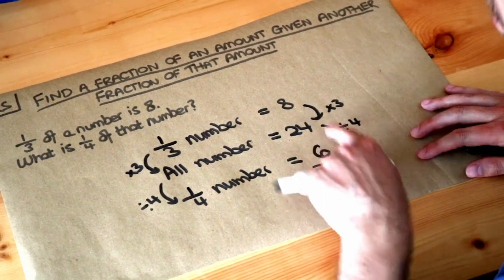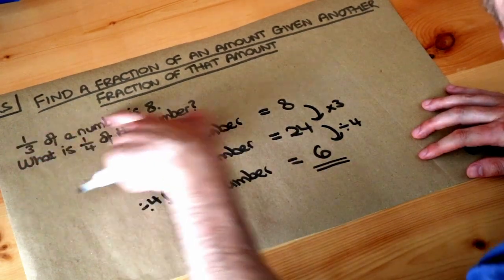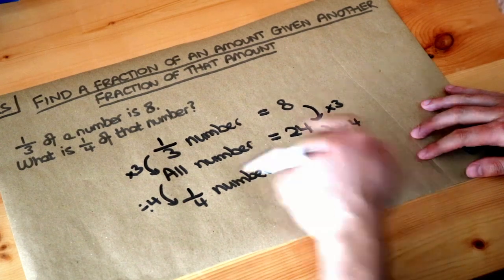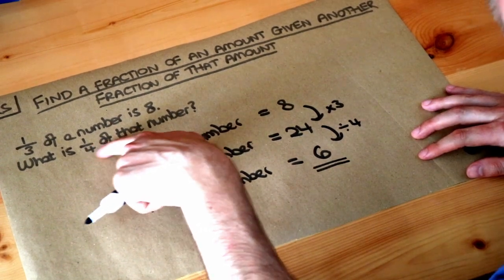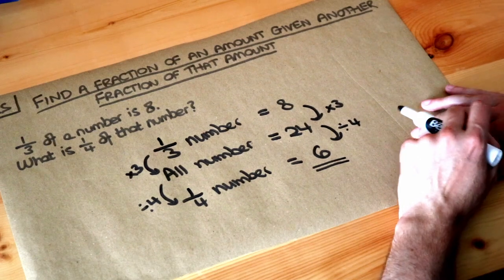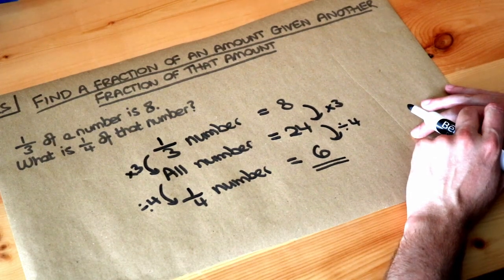So just to recap on the steps, work out what the original number is using that first bit of information. And then once you know that number, you can find the quarter of it.